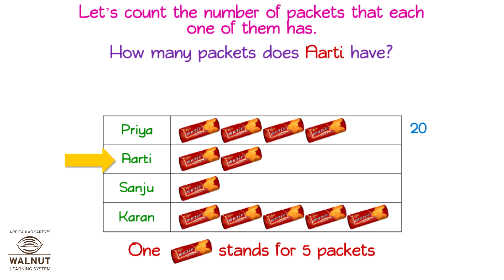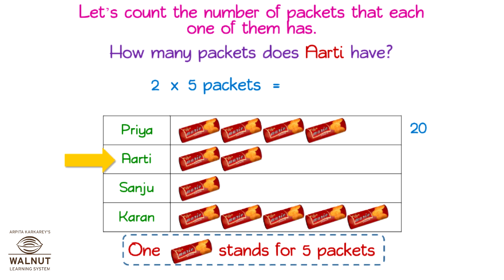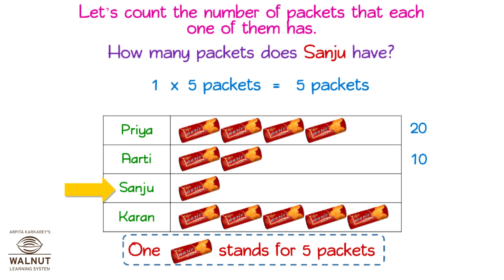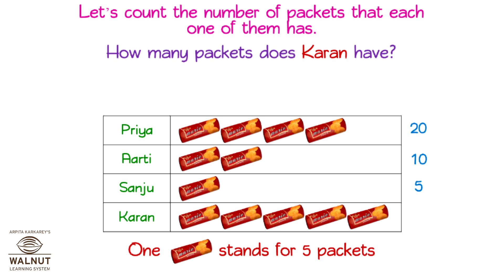For Aarti's entry, there are two symbols. We multiply: two into five packets is equal to ten packets. Let's write that down in the table. For Sanju's entry, there is only one symbol. We multiply: one into five packets is equal to five packets. Let's write that down in the table.